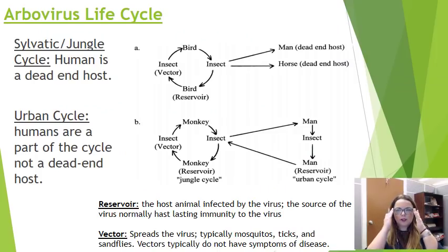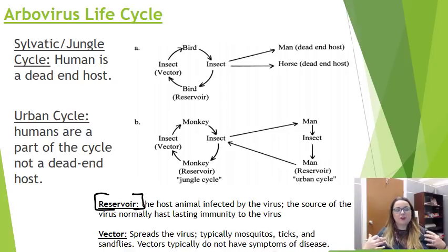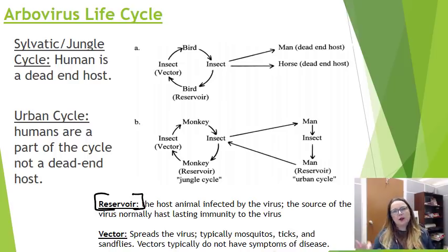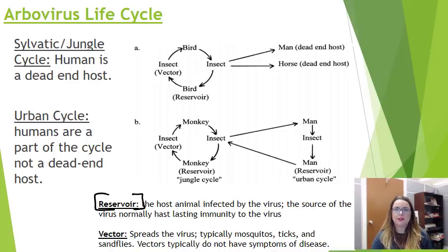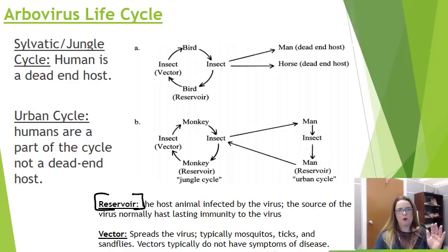Each of the viruses we're going to discuss have different vectors and different reservoirs. A reservoir is kind of where the virus hangs out without causing significant disease — it's the viral source, the pool where it's able to live as a good pathogen because it's not killing the host. Normally the reservoir recovers and develops lasting immunity to the virus. If the virus kills the animal very quickly, it doesn't become a lasting reservoir. What's best in a reservoir for the virus is a prolonged period of viremia, which is required to maintain that arthropod-borne virus disease cycle.